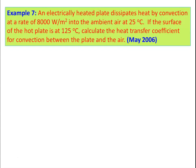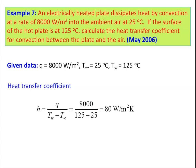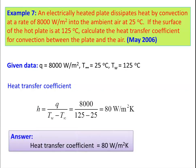Example 7: An electrically heated plate dissipates heat by convection at the rate of 8000 W/m² into ambient air at 25°C. If the surface of the hot plate is at 125°C, calculate the heat transfer coefficient. The heat flux Q = 8000 W/m², so h = Q / (Tw − T∞) = 8000 / (125 − 25) = 80 W/m²·K. The heat transfer coefficient is 80 W/m²·K.